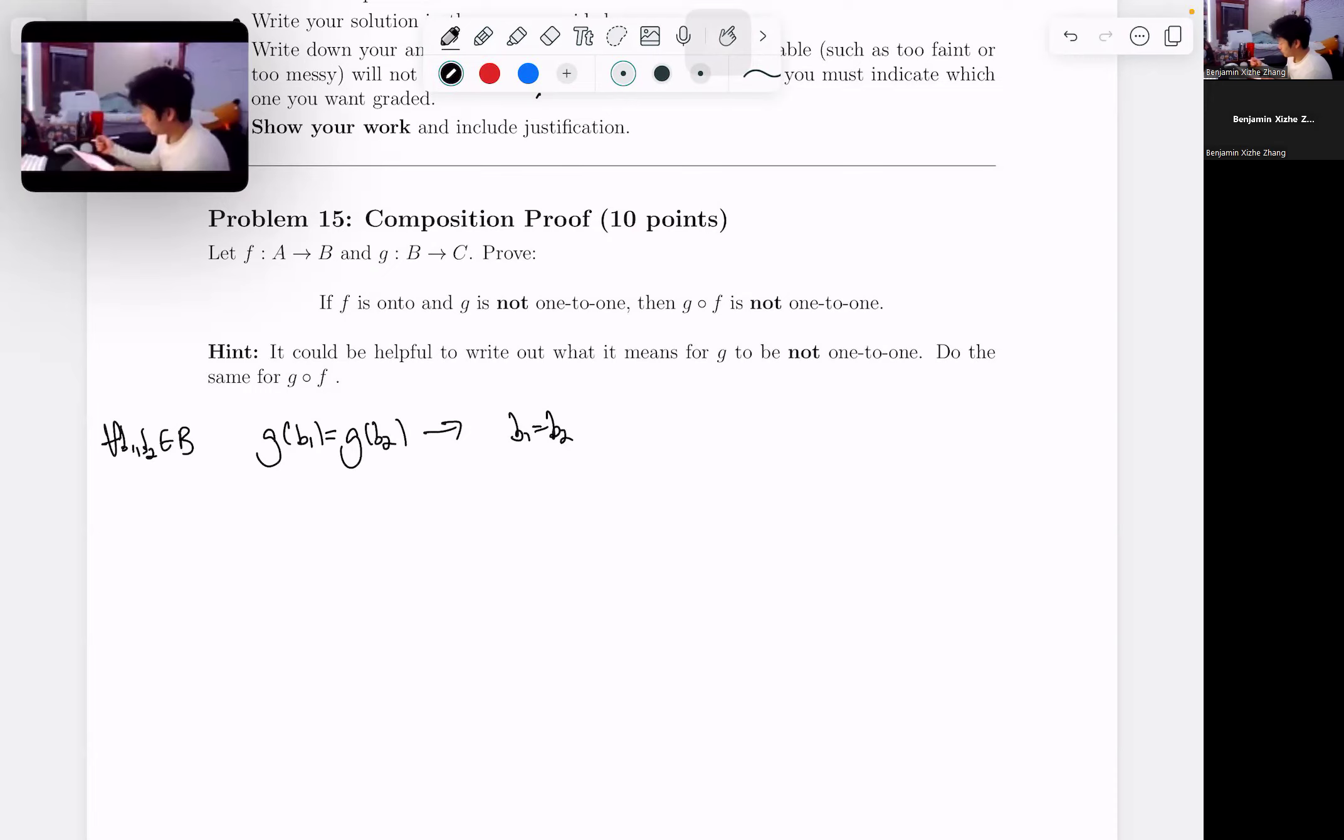So since we know g is not one-to-one, what does that tell us? That means we must have found two elements b1, b2, such that g of b1 equals g of b2, but b1 does not equal b2. So we found two elements in the domain which are different, but mapped to the same element under g in the codomain. So g is not one-to-one.